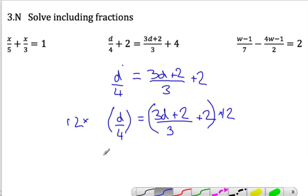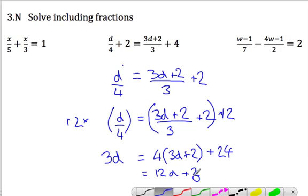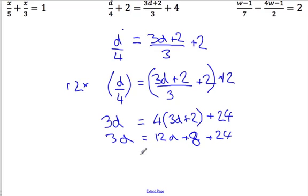So what do we get? That's 12d over 4, which is then 3d, because times it by 12 is like times by 4 and then another 3. And here, distribute the 12 in backwards kind of thing. It's going to be 4 times 3d plus 2. So we're going to get 4 lots of 3d, add 2. And then we're also going to get 12 lots of 2, which is 24. So let's just expand this bit out. 12d, add 8, plus 24. 3d.